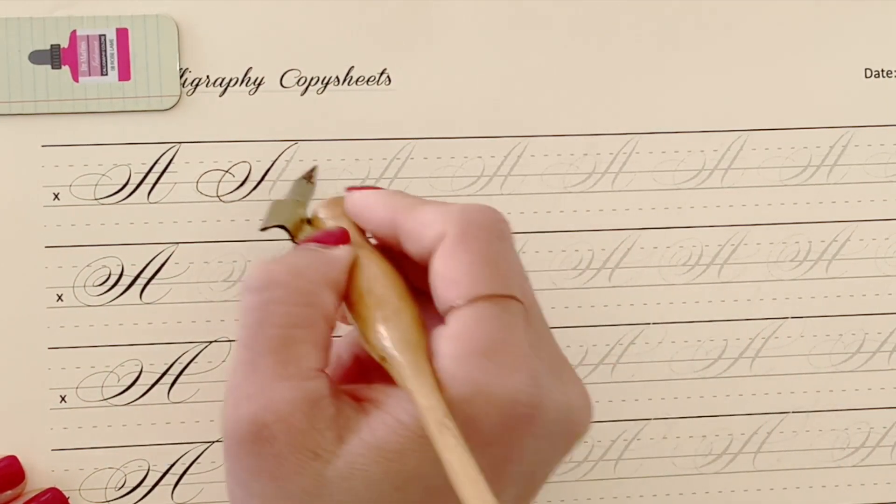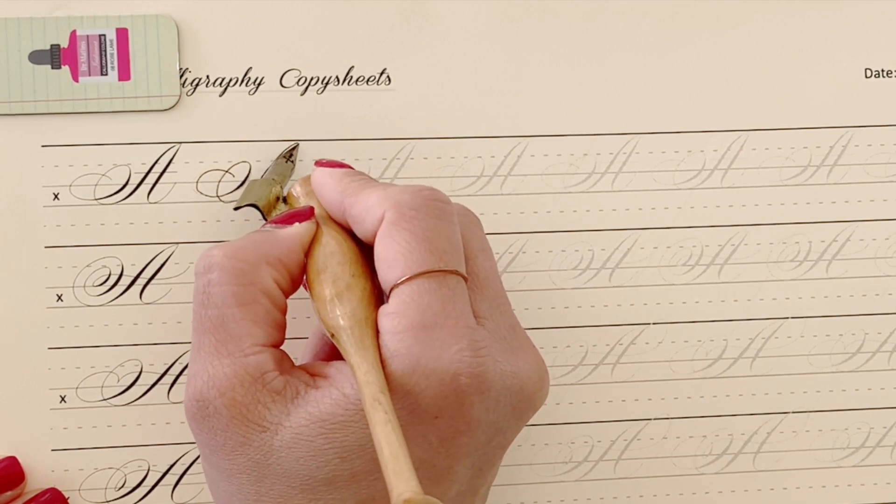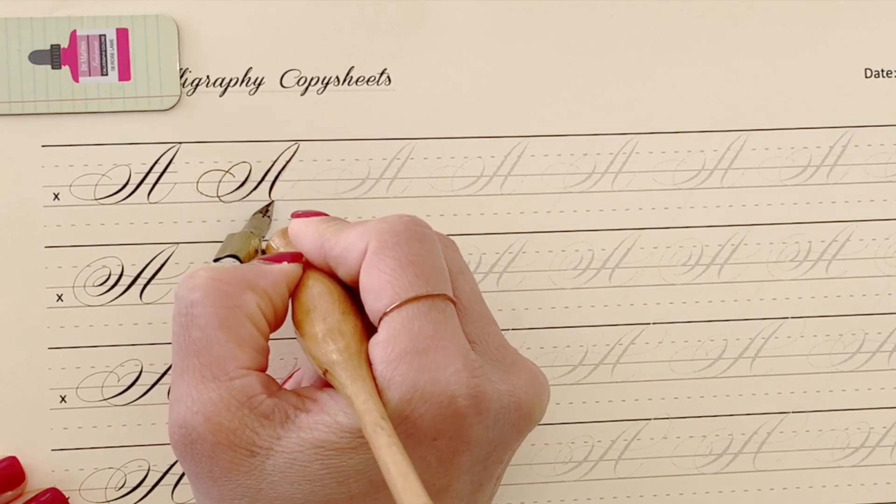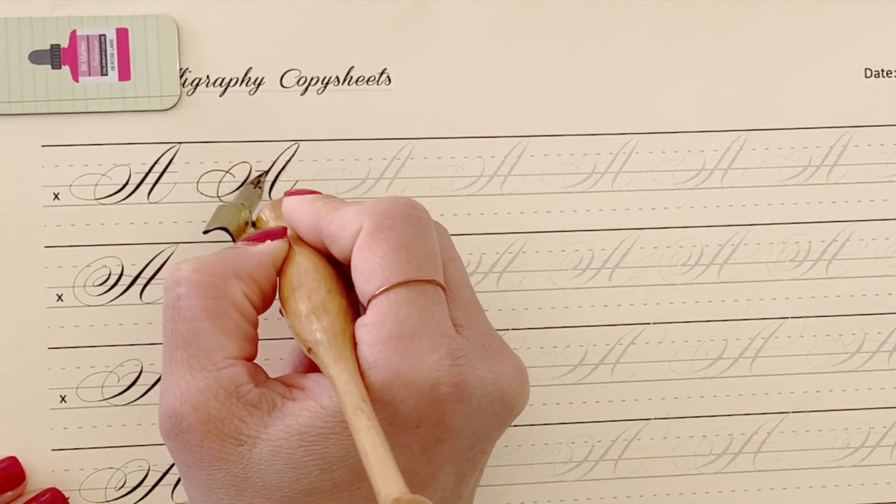Then, you will have the right hand side, which again, make sure you start on light pressure. And add pressure, come up, and then a horizontal line, just very lightly.